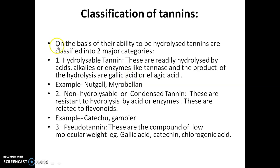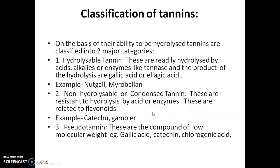On the basis of their ability to be hydrolyzed, tannins are broadly classified into two major categories: hydrolyzable tannins and non-hydrolyzable tannins (or condensed tannins). Hydrolyzable tannins are readily hydrolyzed by acids, alkalis, or enzymes like tannase, producing gallic acid, ellagic acid, or their derivatives — examples are nutgall and myrobalan. Non-hydrolyzable tannins are resistant to hydrolysis by acids or enzymes and are related to the flavonoids. Pseudo tannins are low molecular weight polyphenolic compounds such as gallic acid, catechin, and chlorogenic acid.